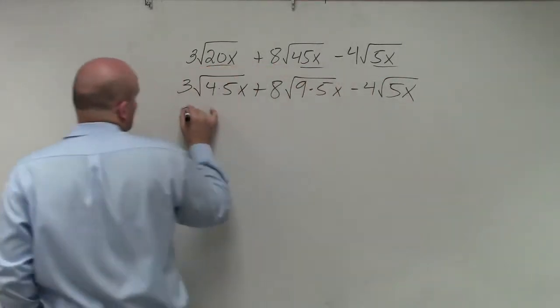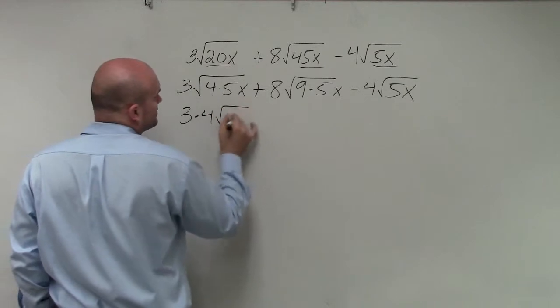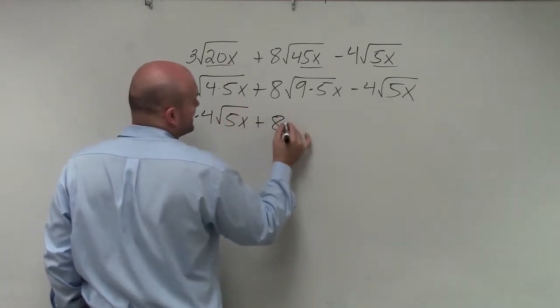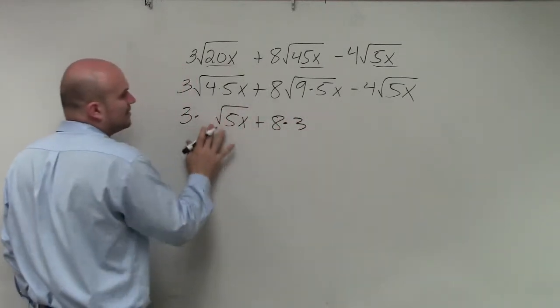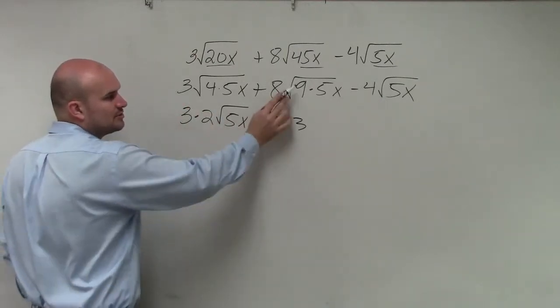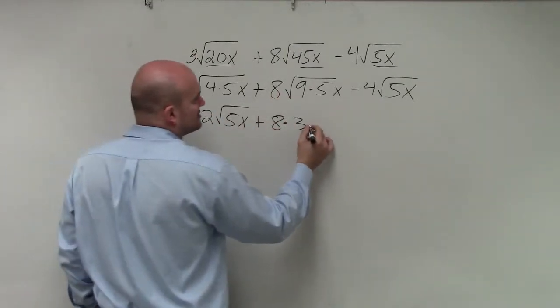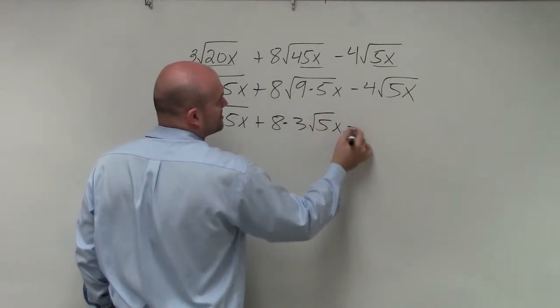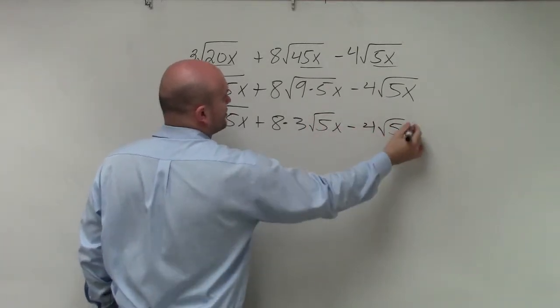So now, I basically have 3 times 2, the square root of 4 is 2, times the square root of 5x plus 8 times 3, the square root of 9 is 3, times the square root of 5x minus 4 square root of 5x.